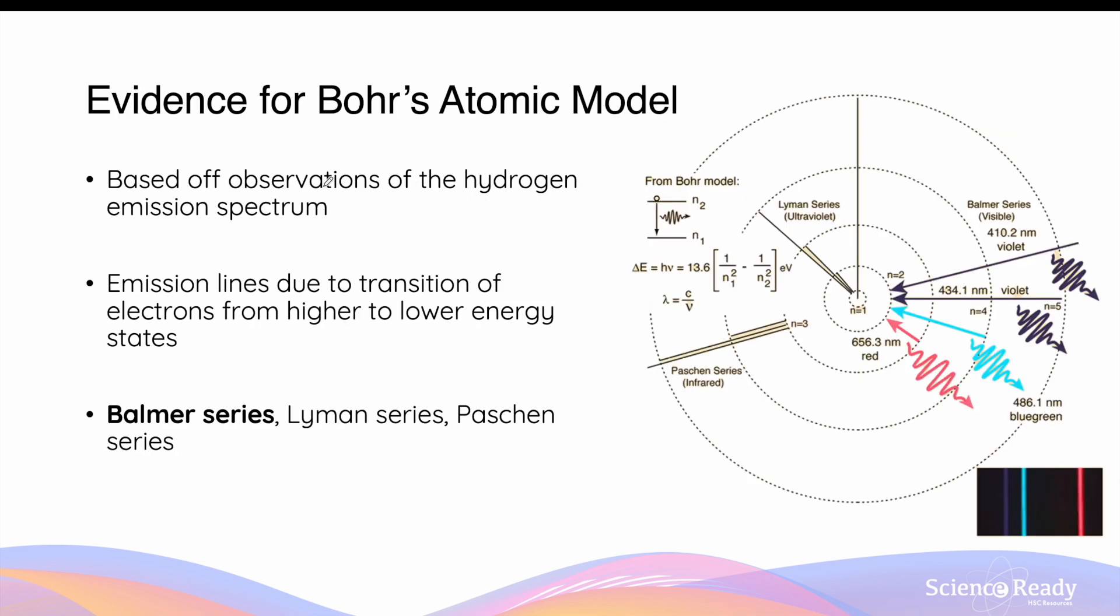Bohr's atomic model is based off observations of the hydrogen emission spectrum. The emission lines produced by hydrogen are due to the transition of electrons from higher to lower energy orbits or states. There are three main sets of emission lines of hydrogen: the Balmer series, the Lyman series, and the Paschen series. On this diagram, electronic transitions from a higher orbit to a second orbit, or N equals 2, produces visible light radiation, and this is collectively known as the Balmer series.